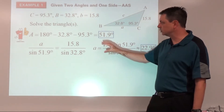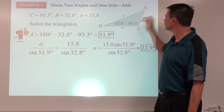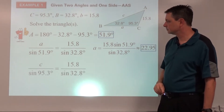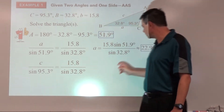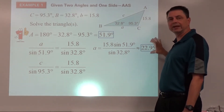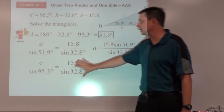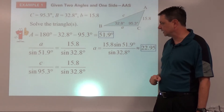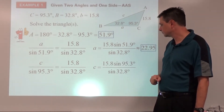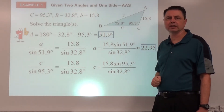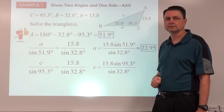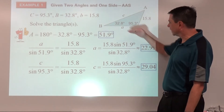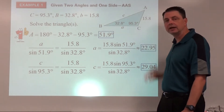For the third side, we do the same process to find c. So little c over sine(95.3°) equals 15.8 over sine(32.8°). Try to use exact values — avoid using the approximated value if possible so we stay as exact as we can. Multiply both sides by sine(95.3°) and type that into your calculator. You get c ≈ 29.04. We've found all three missing pieces: one missing angle and two missing sides.